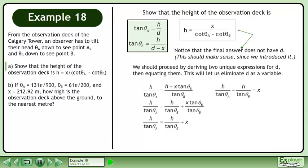Bring all of the terms with height to the left side of the equation. Factor out h. One over tan theta A equals cotangent theta A and one over tan theta B equals cotangent theta B.